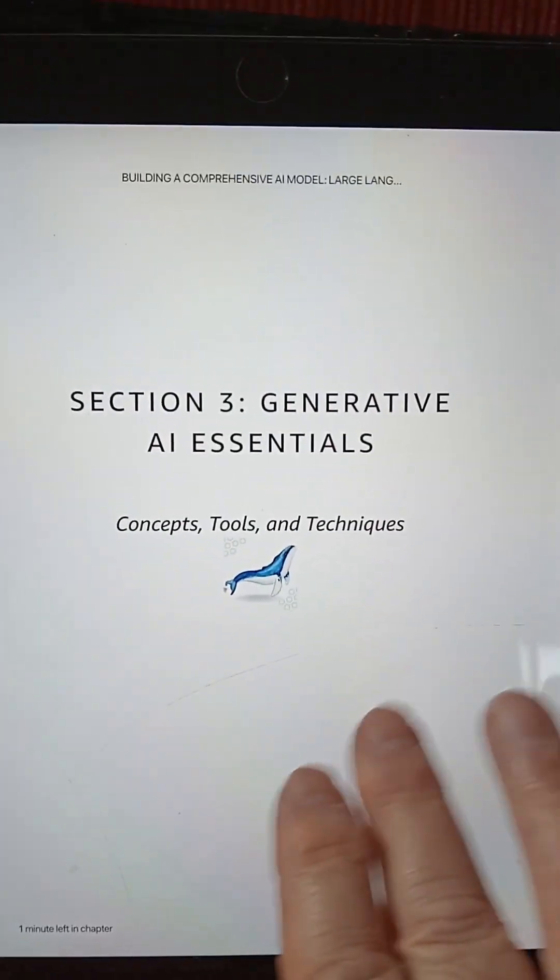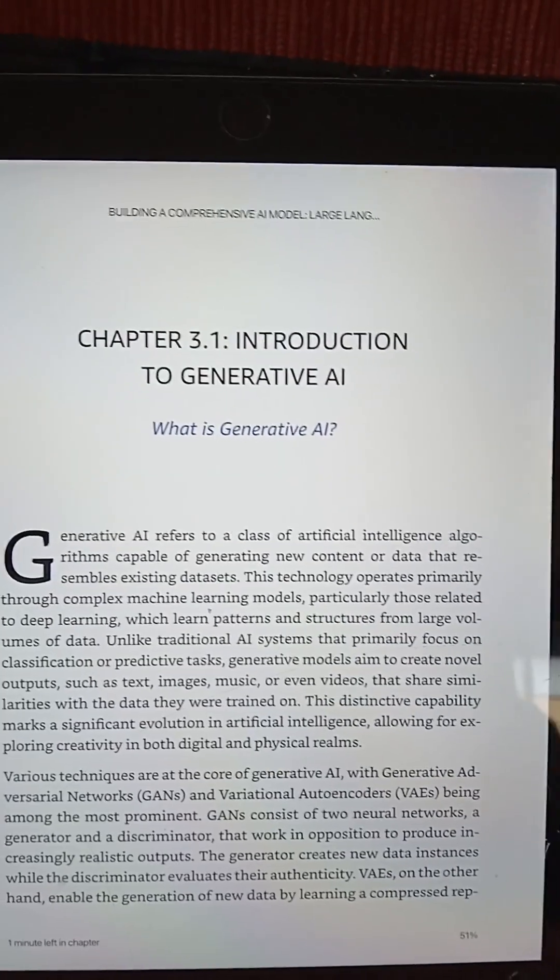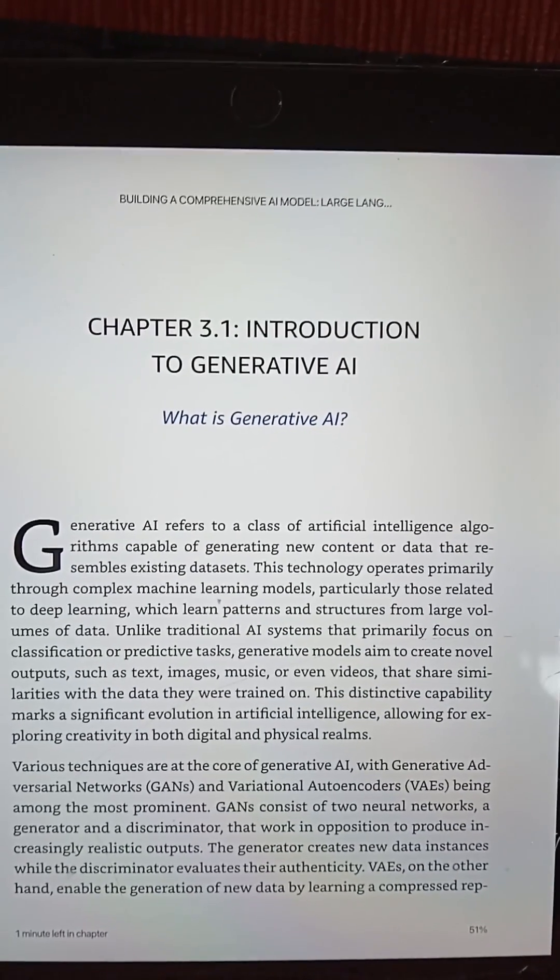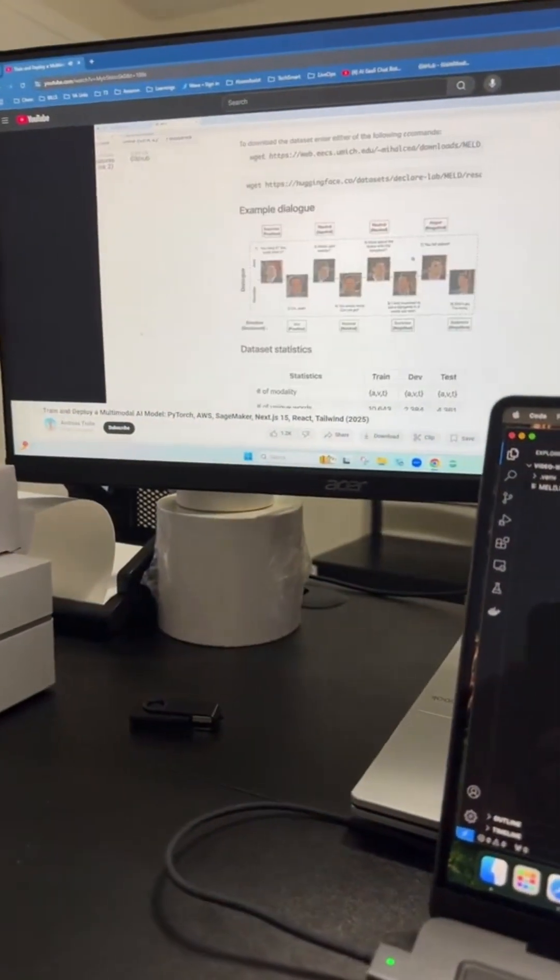Section three is dedicated to generative AI essentials, such as text, image, and audio creation pipelines.